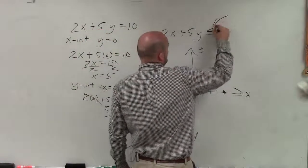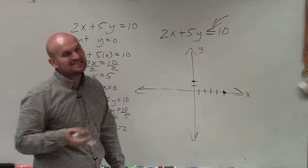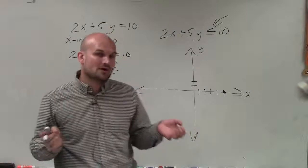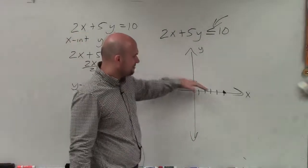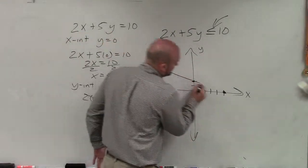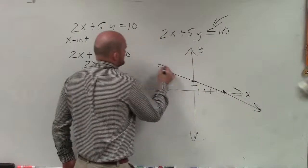And I could use test points, but I could also just look at my inequality sign. Since that's less than or equal to, the or equal to tells me that my line is going to be a part of my solution. So therefore, I'm going to graph it as a solid line.